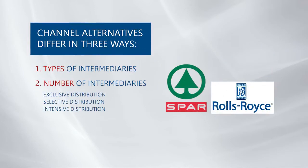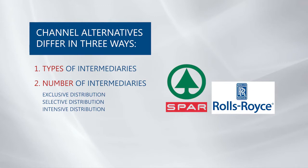Talking about channel alternatives, we have to consider not only the type of intermediaries but also the number of intermediaries — what number of channel members to use at each level. There are three strategies available. We have intensive distribution, where stock is available in many outlets, which is typical for convenience products, with 7-Eleven as an example.